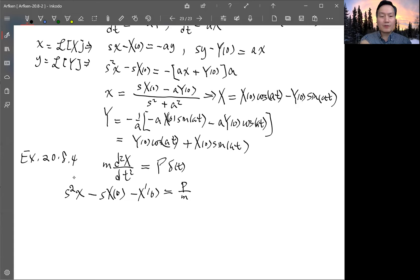And so now the initial condition is for this problem. We set x prime 0 is 0 and x₀ is 0. Therefore both terms are 0. So little x is p over m divided by S².